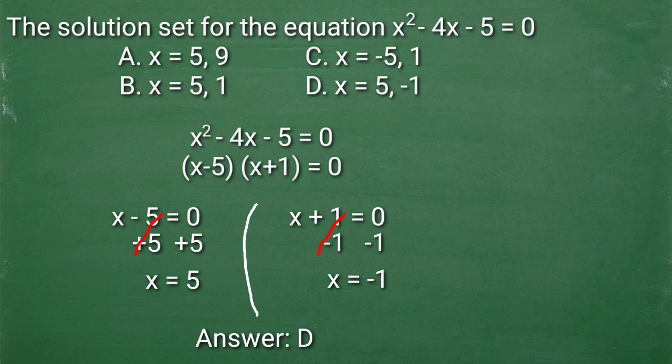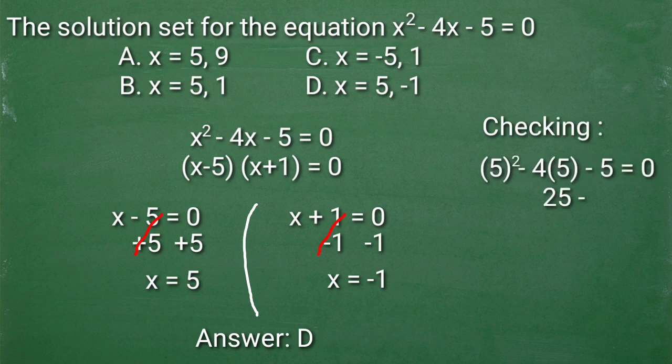Kung nagdadoot kayo ng kaunti yan, pwede niyong isubstitute ang positive 5 at negative 1 dun sa quadratic equation natin. Kailangan magti 0 equals to 0 or magiging true. Subukan natin sa positive 5. 5 is squared minus 20 minus 5 is equal to 0. 25 minus 20 is positive 5 minus 5 is equal to 0. So 0 is equal to 0. Ibig sabihin, true.